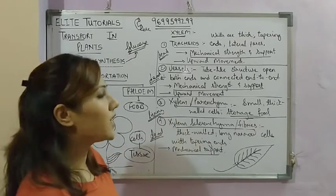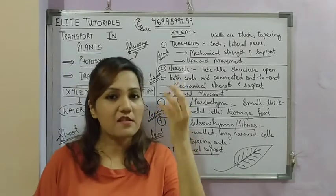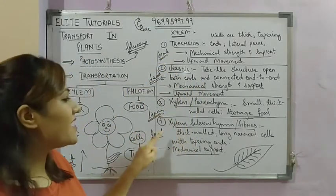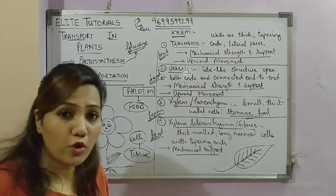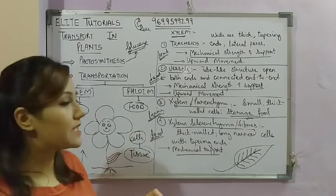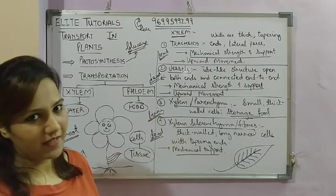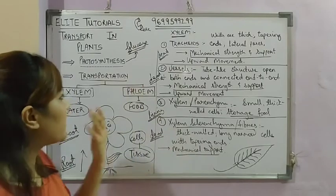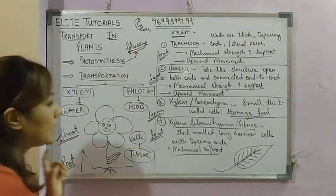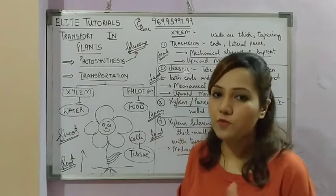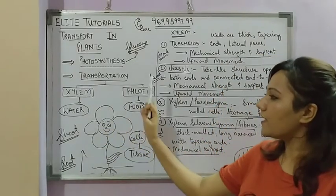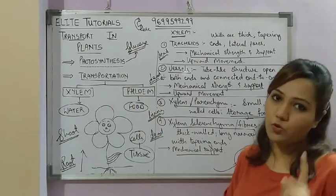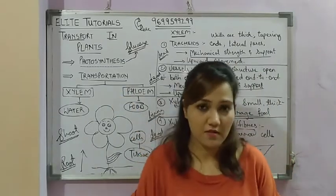To quickly revise the structure of xylem: the four cells are tracheids, vessels, xylem parenchyma, and xylem fibers. Out of these four, only xylem parenchyma is a living cell; the remaining three are dead cells. Phloem transports food, xylem transports water. Miss Daisy is very independent and makes her own food by photosynthesis.